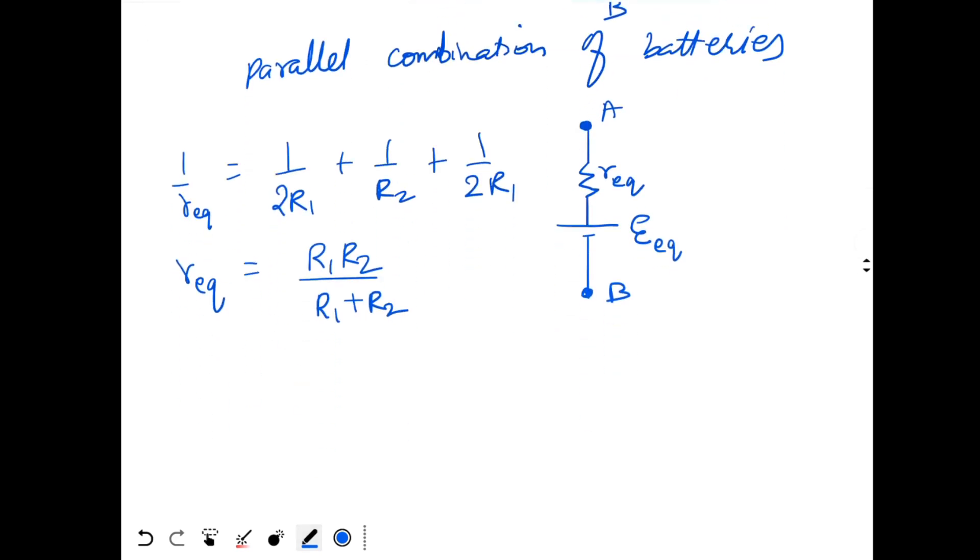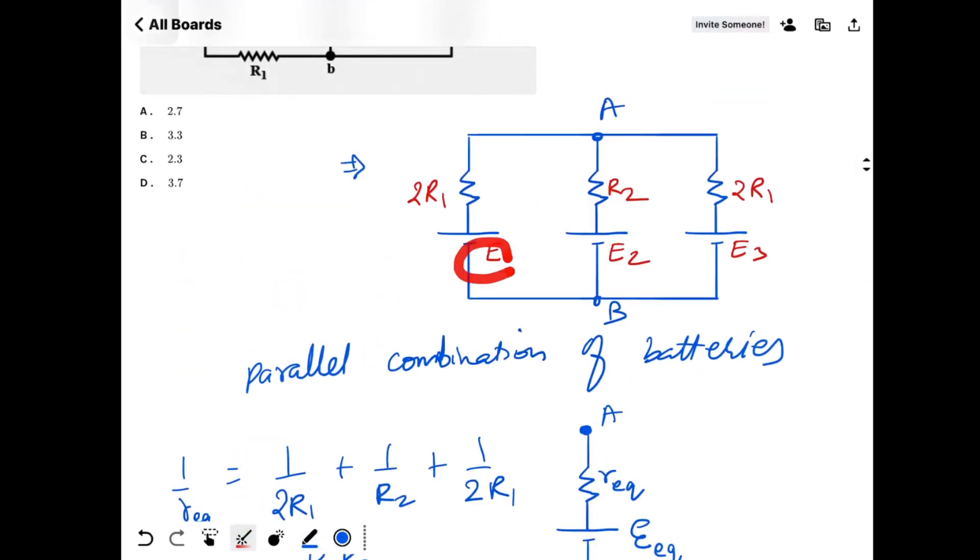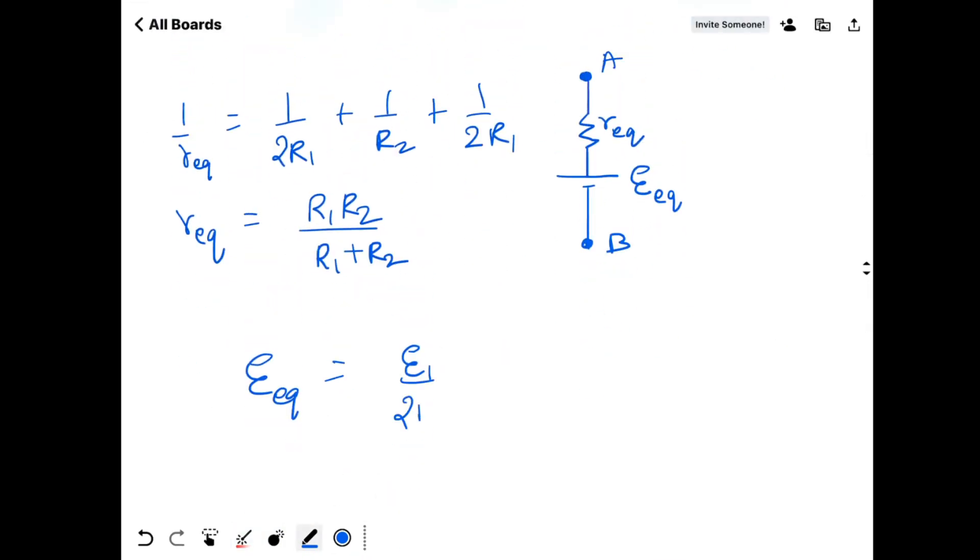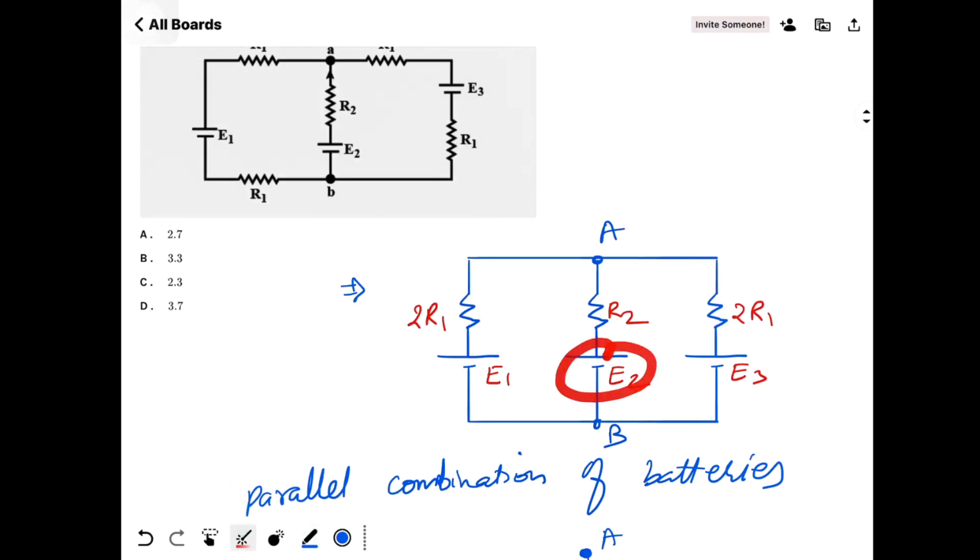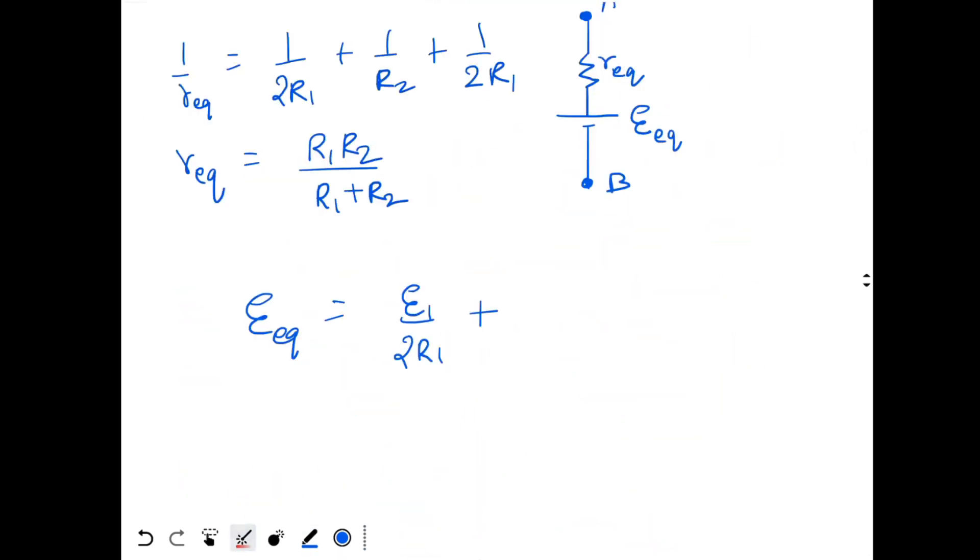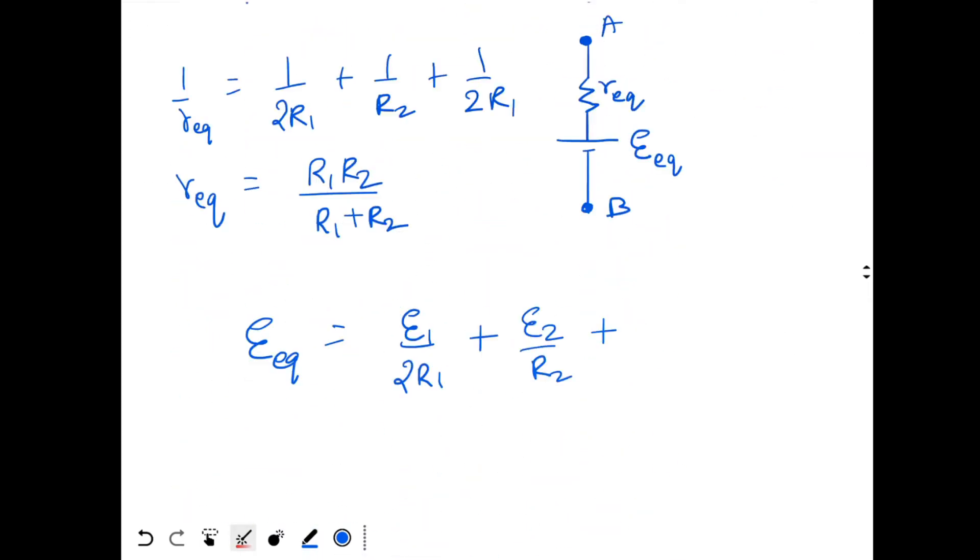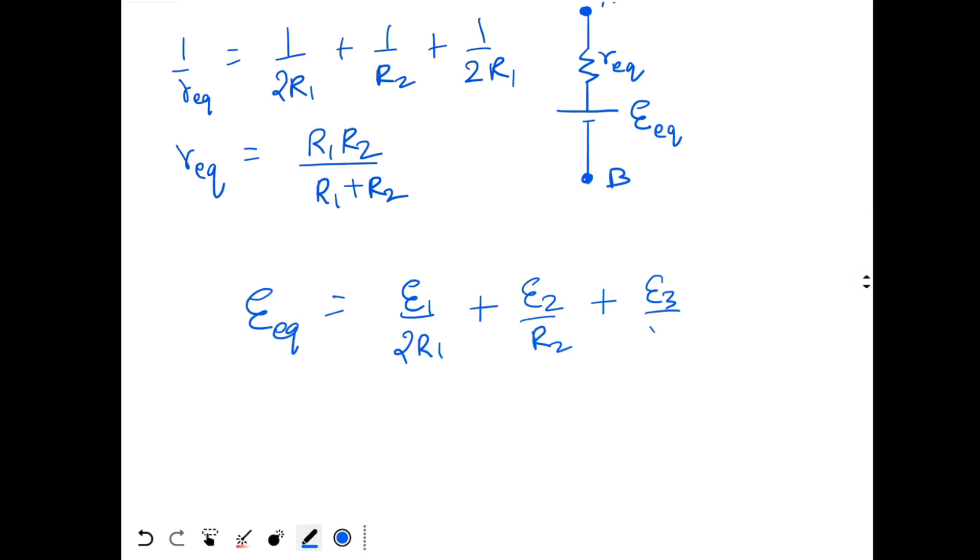So I found R_equivalent. And then the equivalent EMF is given by E1 by 2R1 plus E2 by R2 plus E3 by 2R1, whole multiplied by R_equivalent.